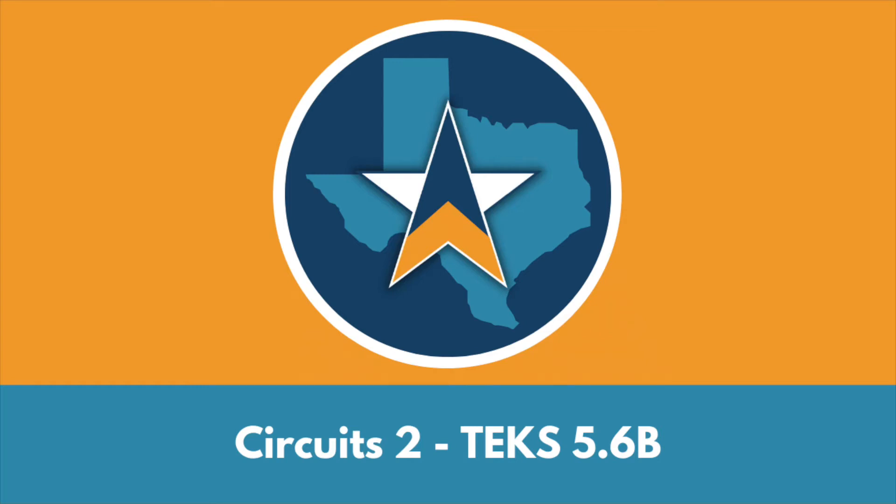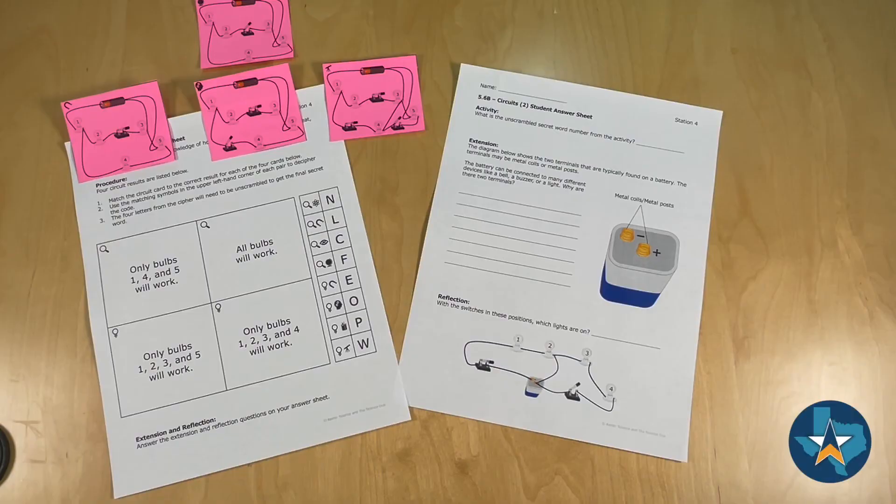This is the Circuits 2 station for TEKS 5-6-B. On the left hand side you'll see the activity sheet that will stay with the station the entire time.